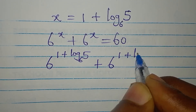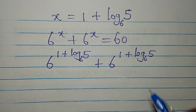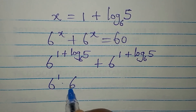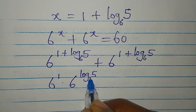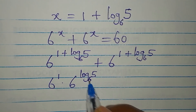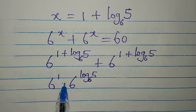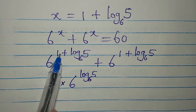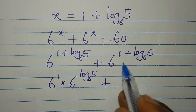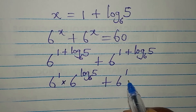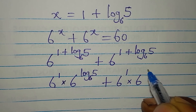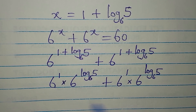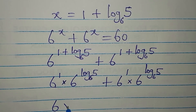Substituting x = 1 + log₆5, we get 6 to the power of (1 + log₆5) plus 6 to the power of (1 + log₆5). This is 6 to the power of 1 multiplied by 6 to the power of log₆5, because when we share the same base and add powers, it means multiplication. Plus the same thing again.